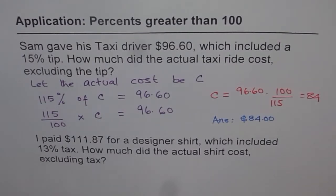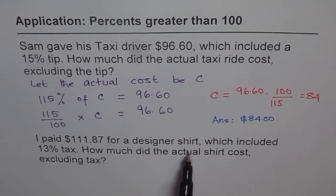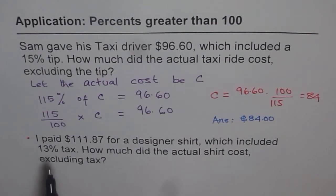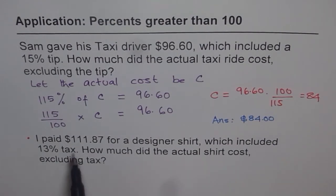Now the second question is for you to do, which is exactly the same. I paid $118.87 for a designer shirt, which included 13% tax. How much did the actual shirt cost, excluding the tax? Whenever you pay tax or tips, you are in a situation where the percent is greater than 100. In this particular case, it is 113% of the actual cost. So 113% of the actual cost should equal the money paid. Try it out and then move on to question number six.